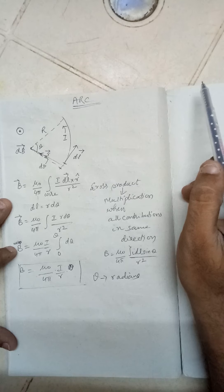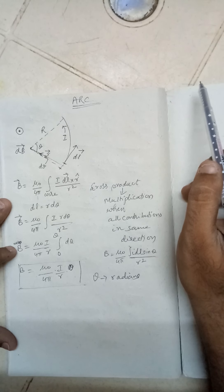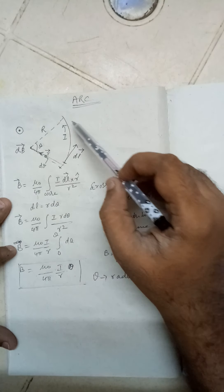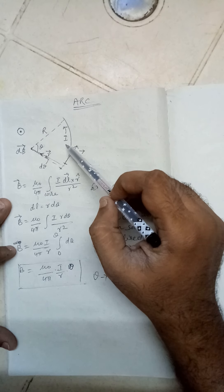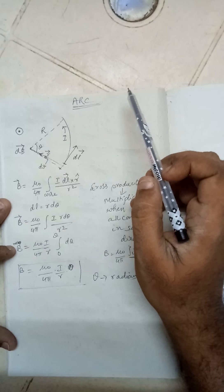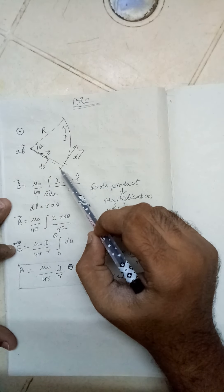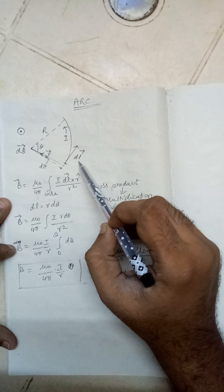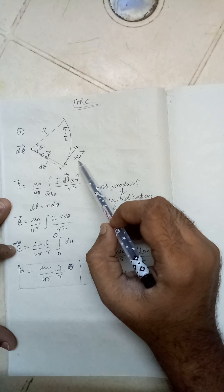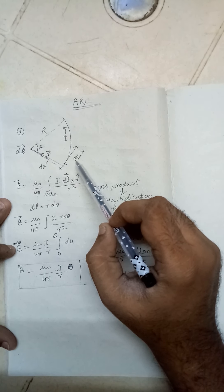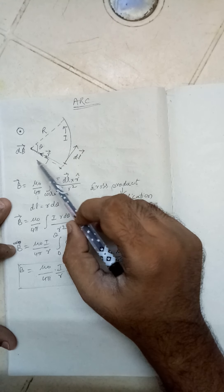So here we have to find the magnetic field. We can apply Biot-Savart. You can see the diagram shows the direction of current. Now if I take a small length dl, it will be making d theta with respect to the center.